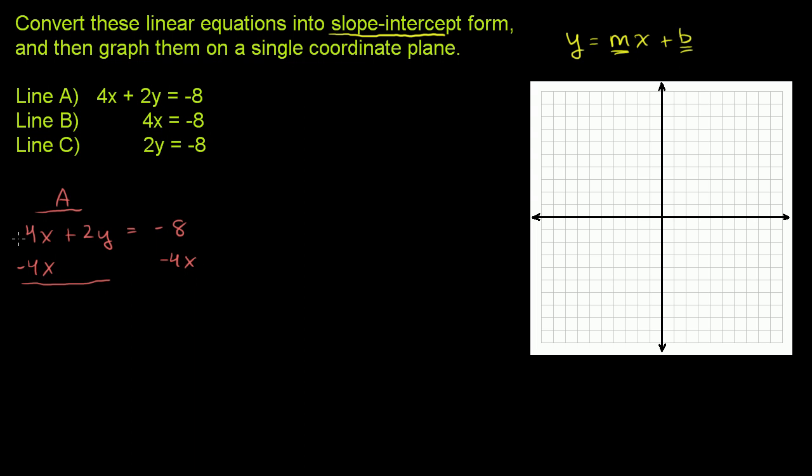The left-hand side of the equation, these two 4x's cancel out, and I'm just left with 2y equals—and on the right-hand side I have negative 4x minus 8, or negative 8 minus 4x, however you want to view it. Now we're almost at slope-intercept form. We just have to get rid of this 2, and the best way to do that is divide both sides of this equation by 2.